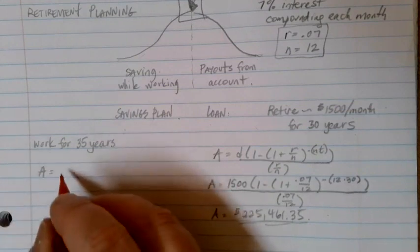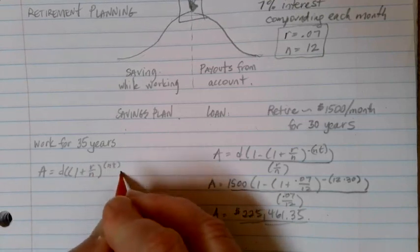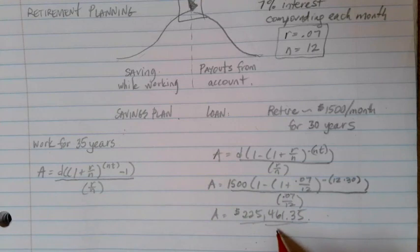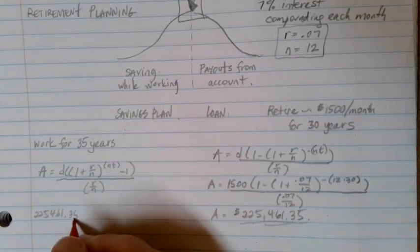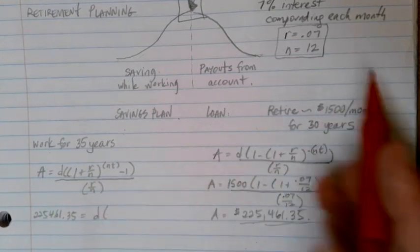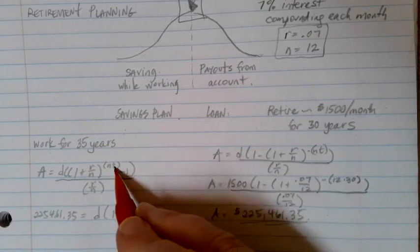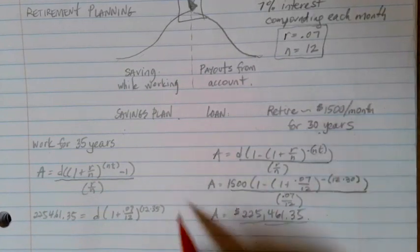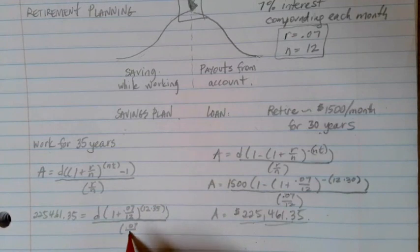And here's my savings plan formula. Again, it's a little bit different. 1 plus R over N to the Nt minus 1 at the end, all divided by R over N. So in this case, the A is my savings goal that I need, which is going to be that $225,461.35. I want to figure out D, what my monthly contribution would have to be for this. And I'm still using the same savings account. So I'm still looking at 7%, 0.07 over 12. But because my time this time is going to be 35, because I'm going to be working for 35 years. Here, I was expecting 30 years of payment was what I was planning for, but I'm going to be working and saving up every month for 35 years. And here, I'm going to do 0.07 over 12 again.